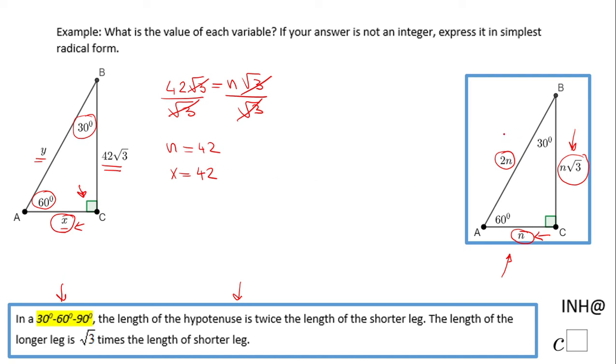Now let's take a look at the hypotenuse. If you notice, the hypotenuse is twice that short leg. So y will be twice that n, twice that x: 2 times 42, and that will be 84. Y will be 84.